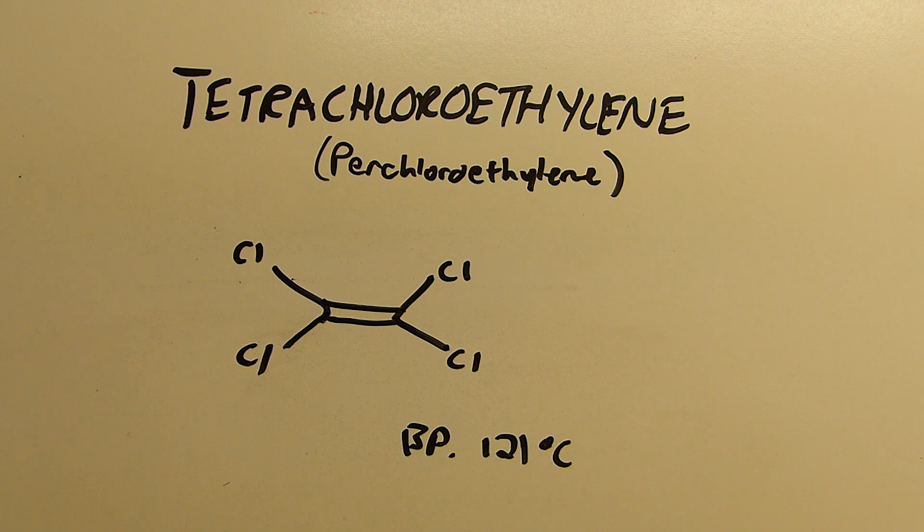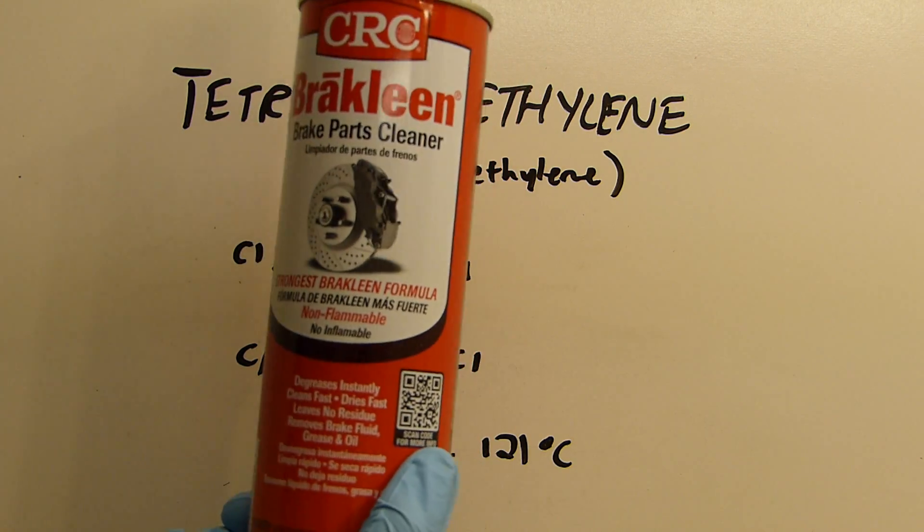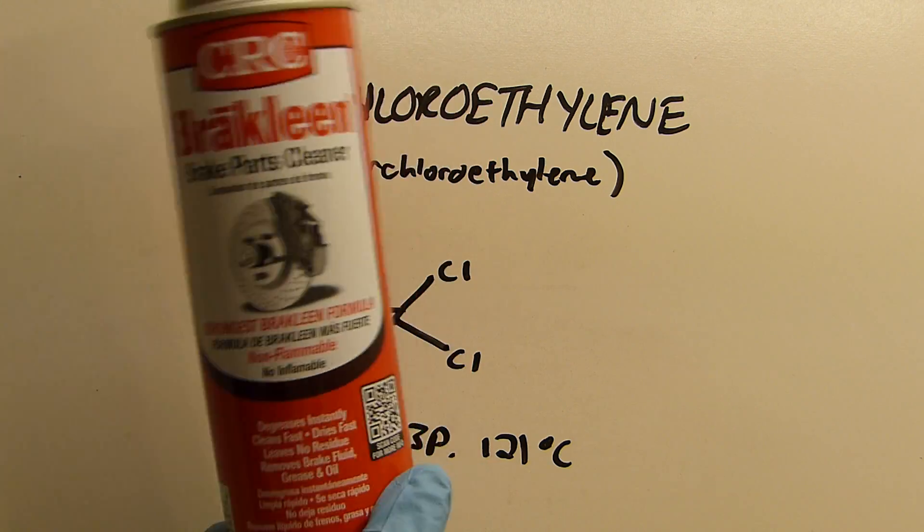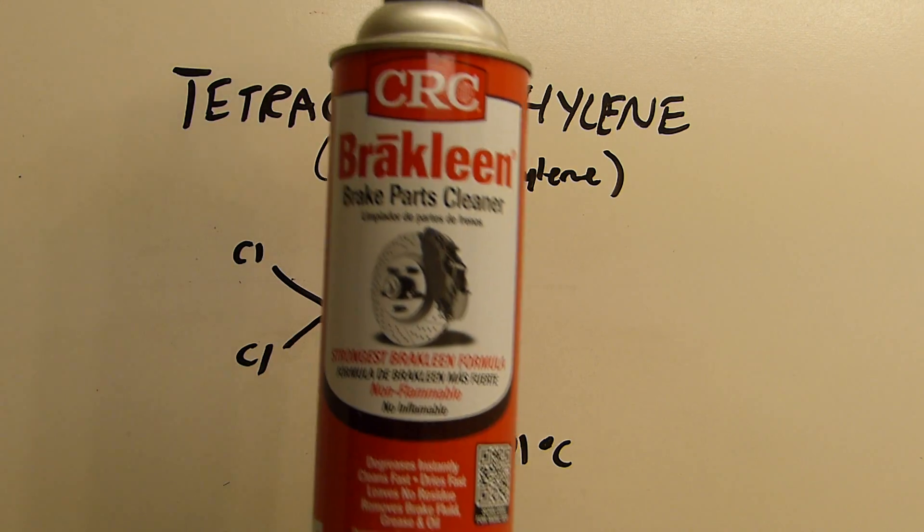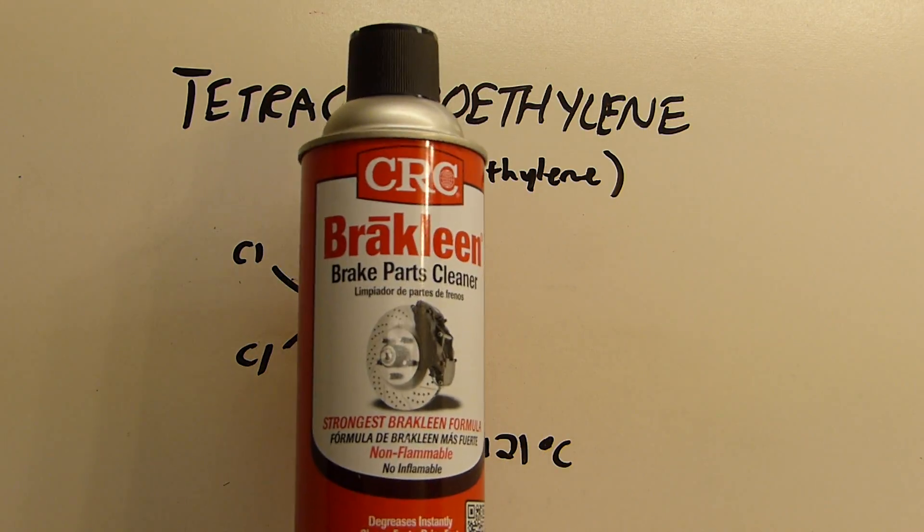Anyway, it's a water-clear liquid like I said, it's a dense hydrocarbon and it boils at 121 celsius. You can find it at the store in the form of brake cleaner. This is the non-flammable formula. Make sure that's the non-flammable formula, that's important because the flammable formula only contains things like toluene and methanol and acetone and obviously no tetrachloroethylene.